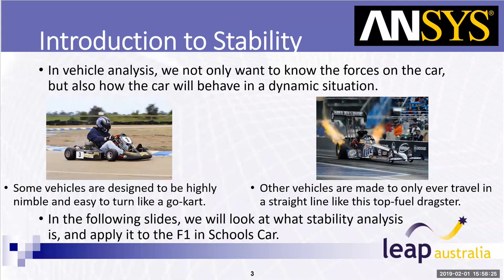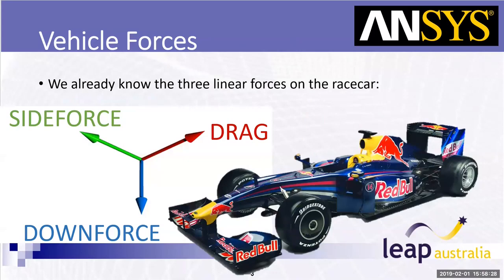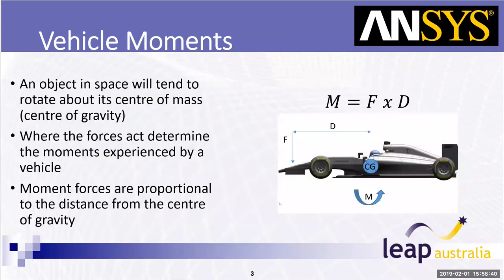Objects in space will tend to spin about their centre of gravity. These are the forces that you generally tend to see — the downforce, the drag, and the side force. They'll create moments. A moment is proportional to the force times the distance. Where that force is acting will tell us how big of a moment is acting on the vehicle, which is a rotating force, and it'll tell us about the stability characteristics of the vehicle.